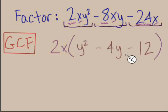With the GCF out front, we're setting up a set of parentheses and putting the leftovers inside. So the 2x divided from this first term is leaving us with the y². From the middle term, we're left with negative 4y. From the third term, we're left with negative 12. So that's great work for finding the GCF, but it's not going to end there.